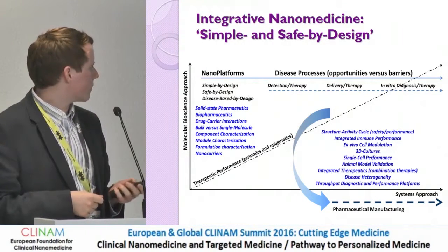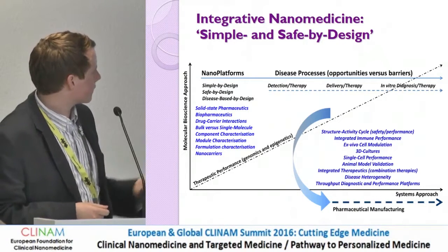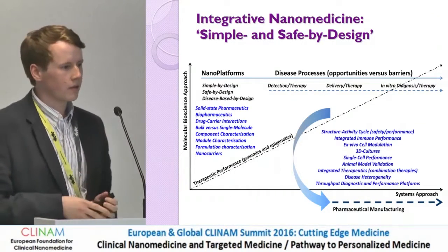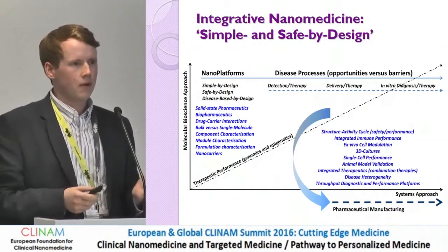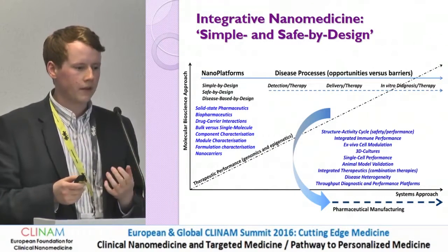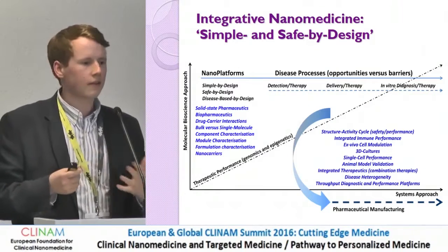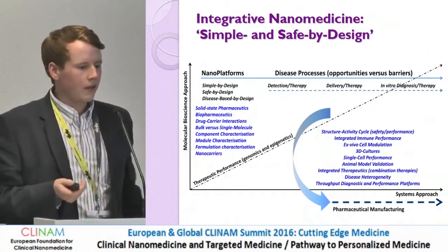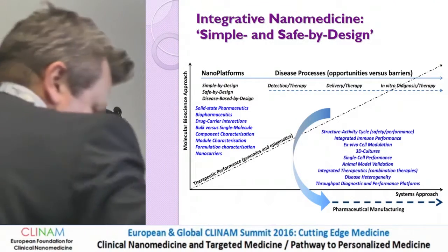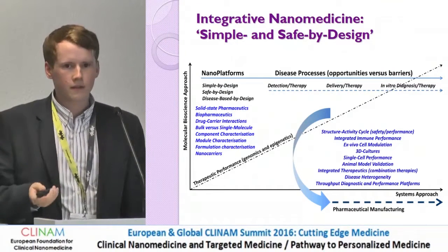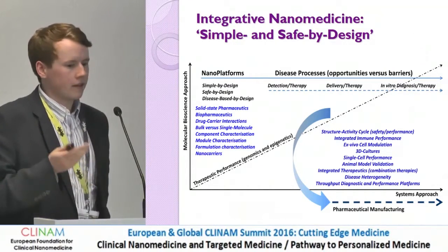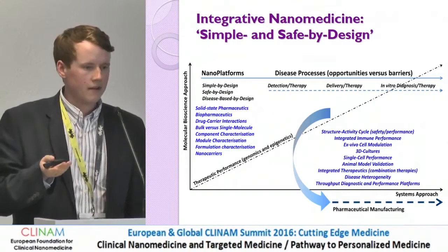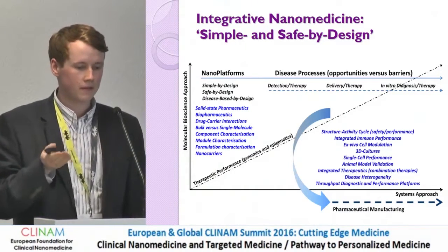We also look at the systems approach using the techniques on the right-hand side in blue, such as 3D cultures, animal model validation, or investigating single cell performance — to ensure that we're getting therapeutically relevant results and that the therapy is safe from not causing side effects or off-target effects. That allows us to balance the therapeutic performance to the safety of the therapy, and by taking into consideration pharmaceutical acceptability and feasibility throughout the process, we can progress any promising therapies through to manufacturing.